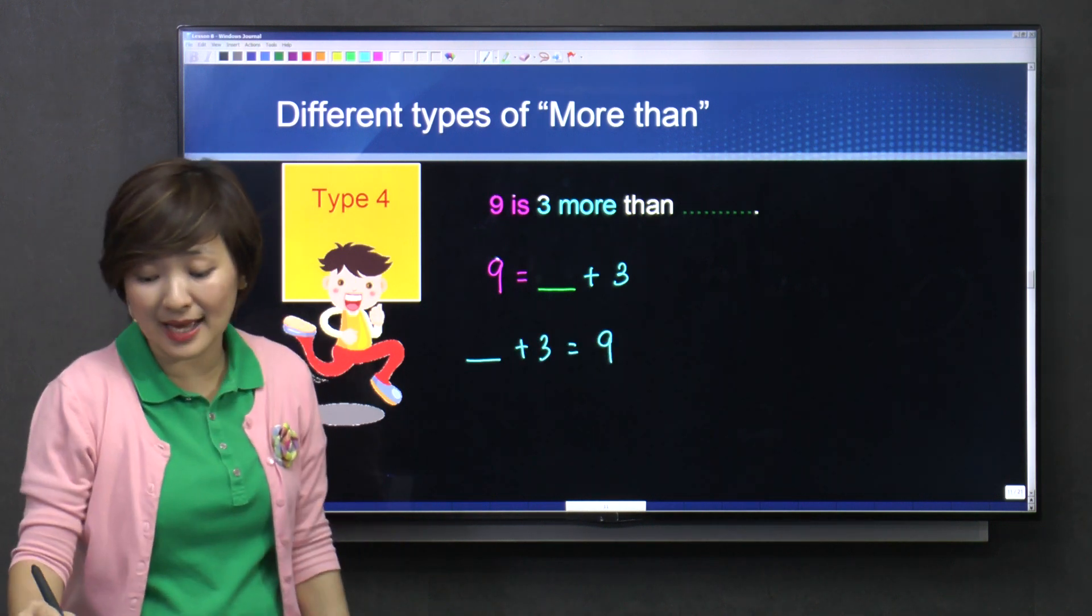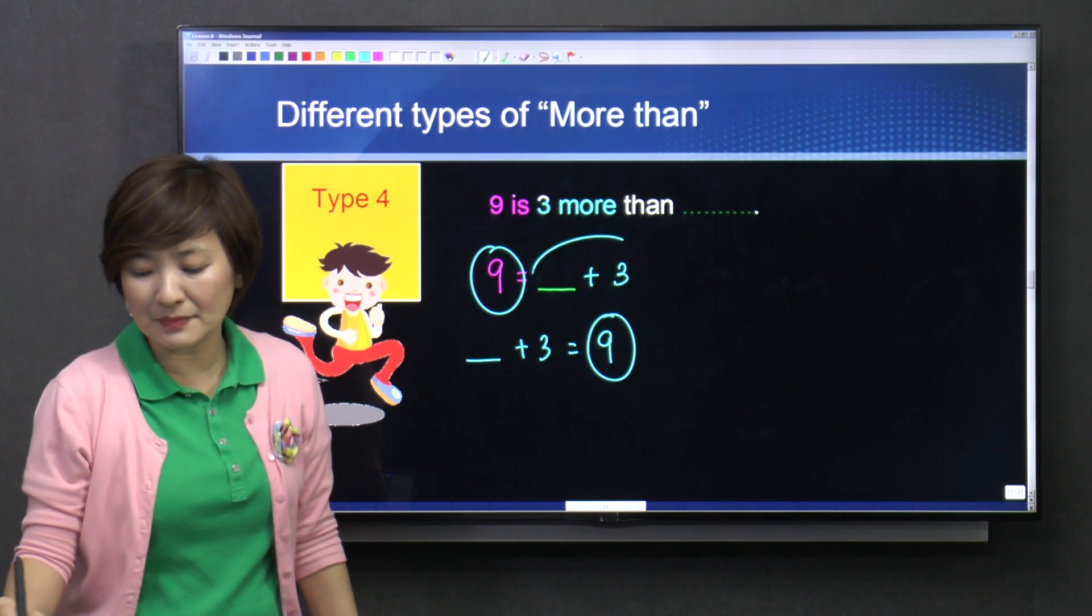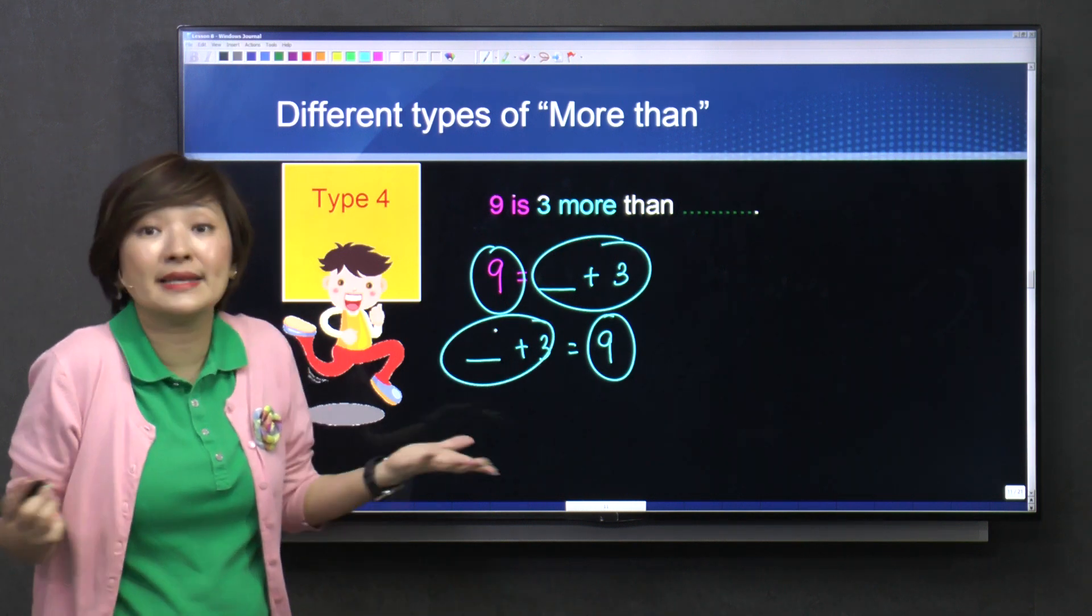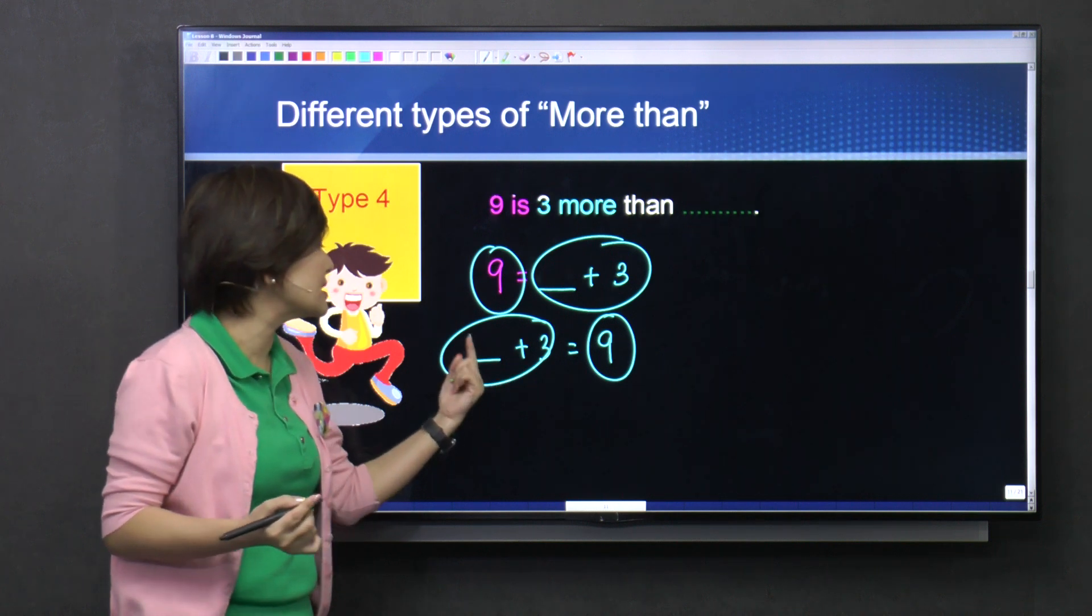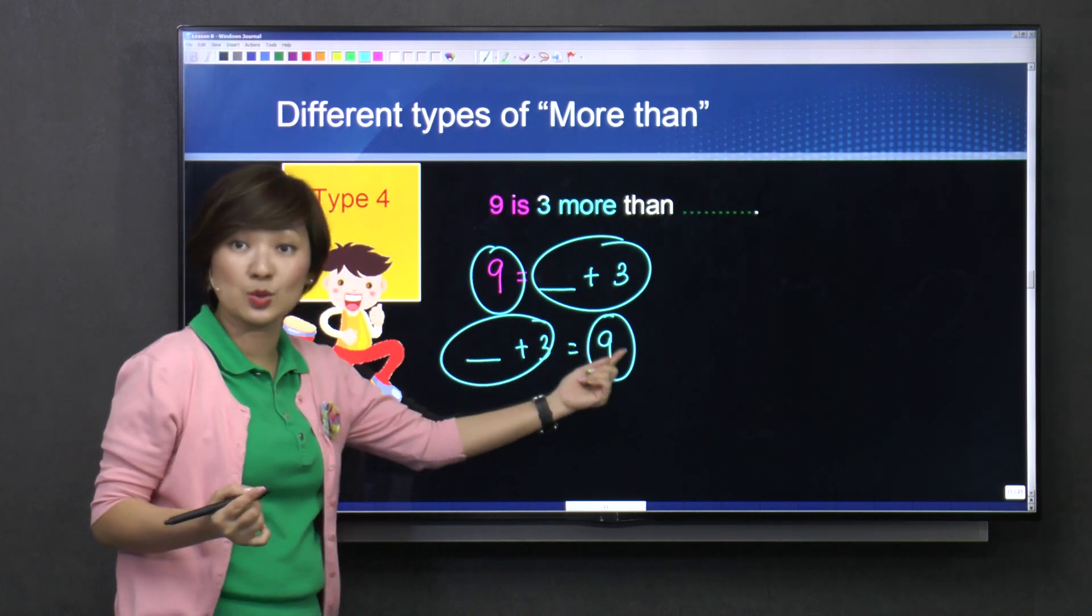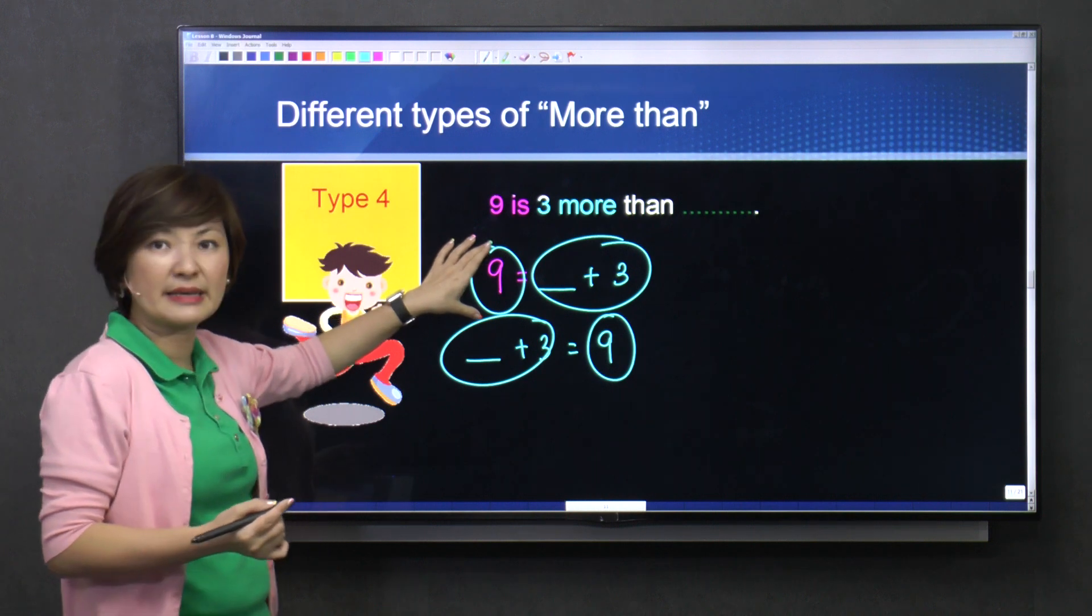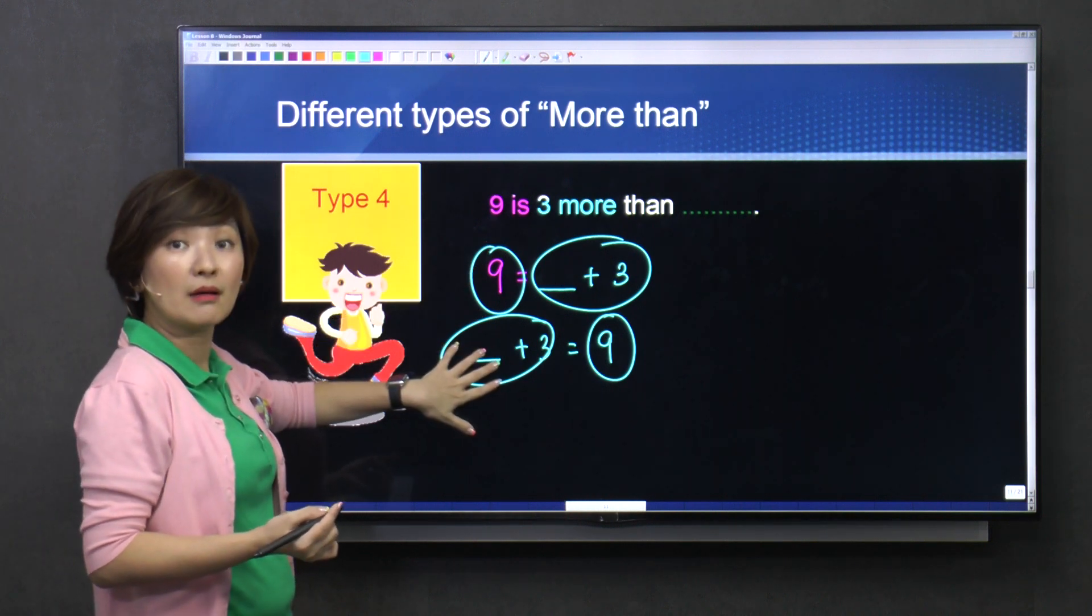Nine is here. Something plus three is here. And both are equal. Okay, so it is okay to have it like this. Something plus three equals to nine. After you look at this and you find, eh, I don't like it, you can always swap it.